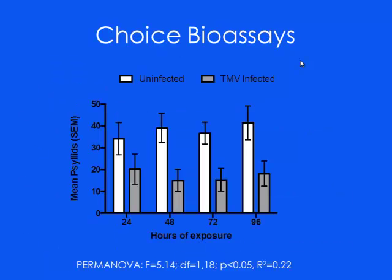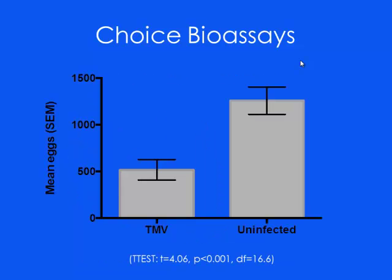In the choice bioassays, at 24, 48, 72, and 96 hours, we looked to see where the insects are. In every instance, the insects prefer the plants that aren't infected with TMV. If you have tobacco mosaic virus, the insects don't like it — they would rather be on the plants that aren't sick. If you look where they lay their eggs after that, you get a similar result: if you have tobacco mosaic virus, they don't land on the plant as much and they also don't lay as many eggs on that plant. They'd rather use healthy plants.